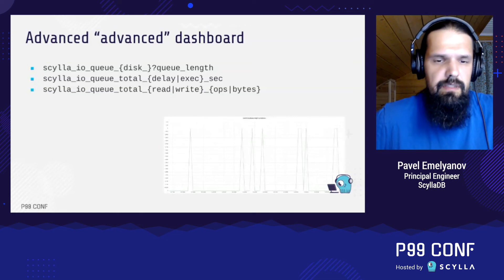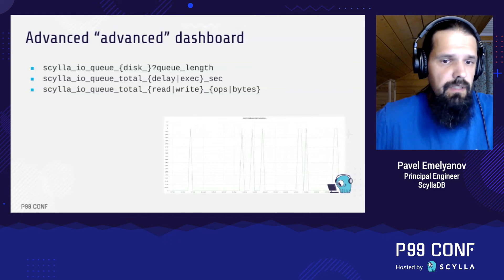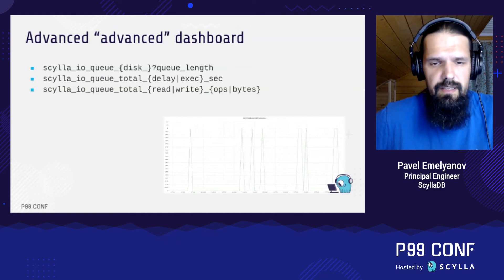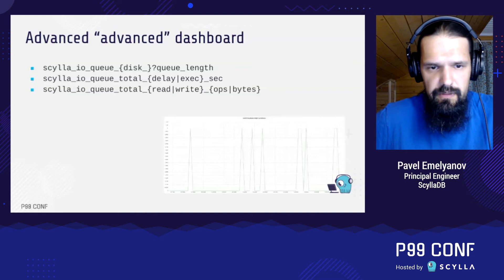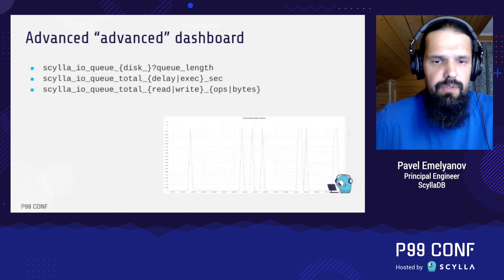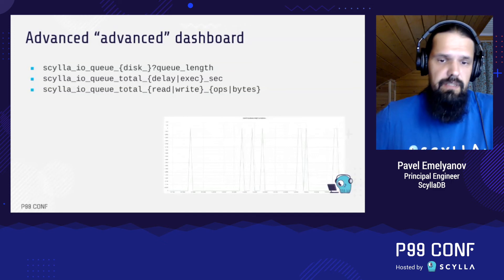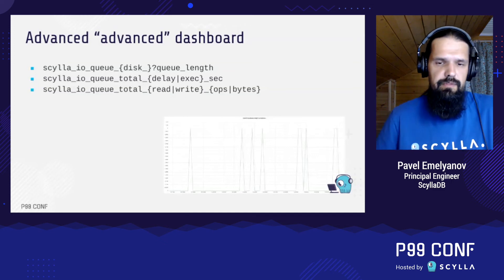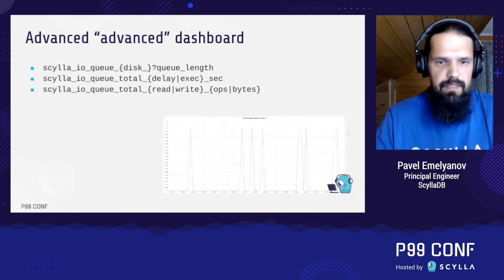Last but not least, the bandwidths and IOPS plots are now reported separately for reads and writes, which is practically useful for compaction and streaming priority classes.